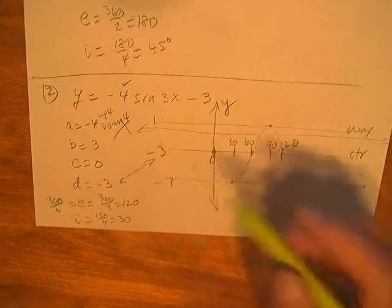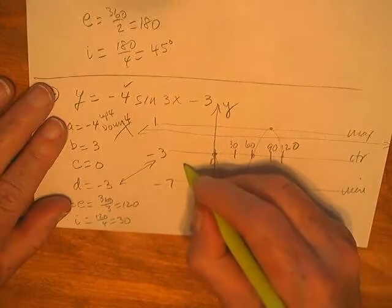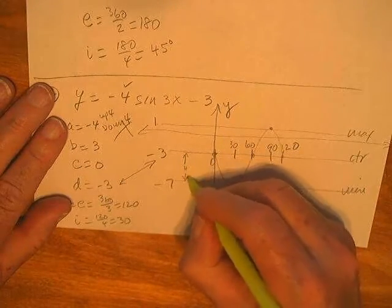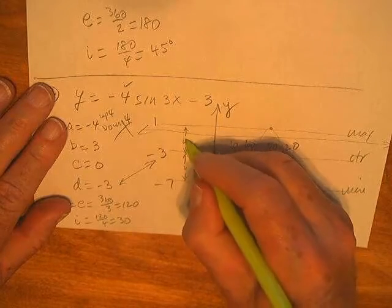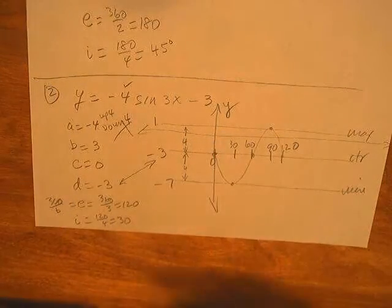But the amplitude here is just this distance, and as we know, distance is not negative. We don't have sides of triangles that are negative.